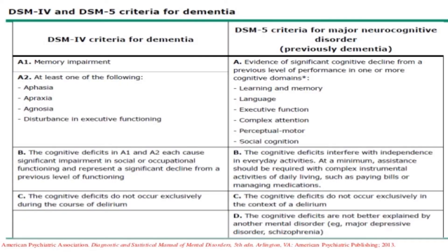This is the DSM-4 criteria for dementia and DSM-5 criteria for major neurocognitive disorder, which was previously called dementia. For DSM-4, there is memory impairment plus at least one of the following: aphasia, apraxia, agnosia, or disturbance in executive functioning. The cognitive deficits must cause significant impairment in social or occupational functioning and represent a significant decline from a previous level of functioning. Cognitive deficits do not occur exclusively during the course of delirium.